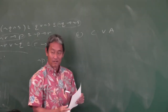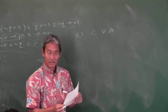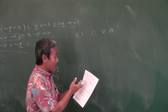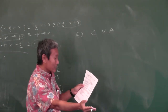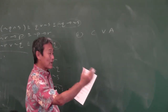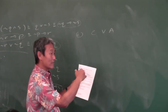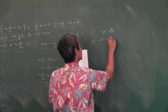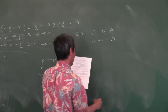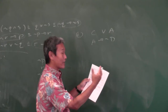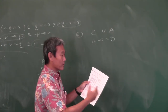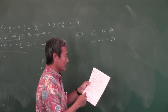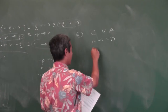Of course it matters. Look at your notes. A is a sufficient condition for NOT D means A implies NOT D. And D is a necessary condition for B means B implies D.